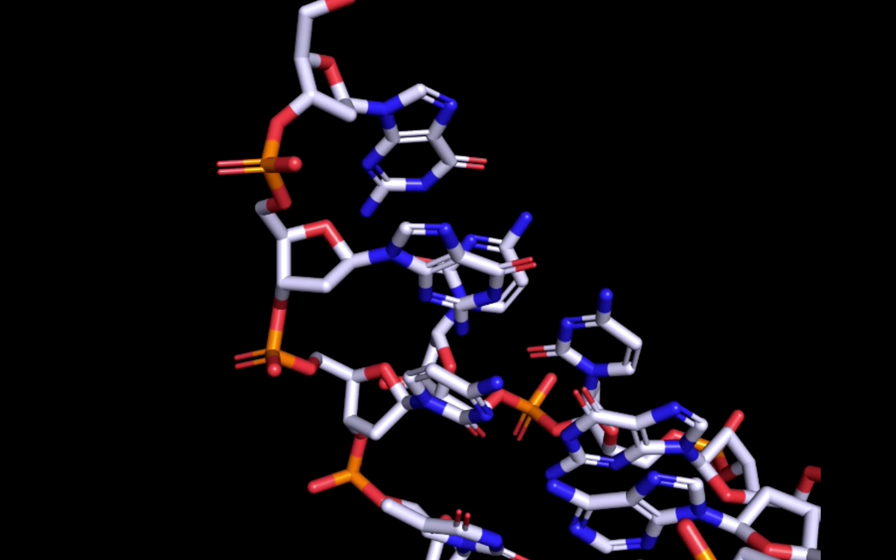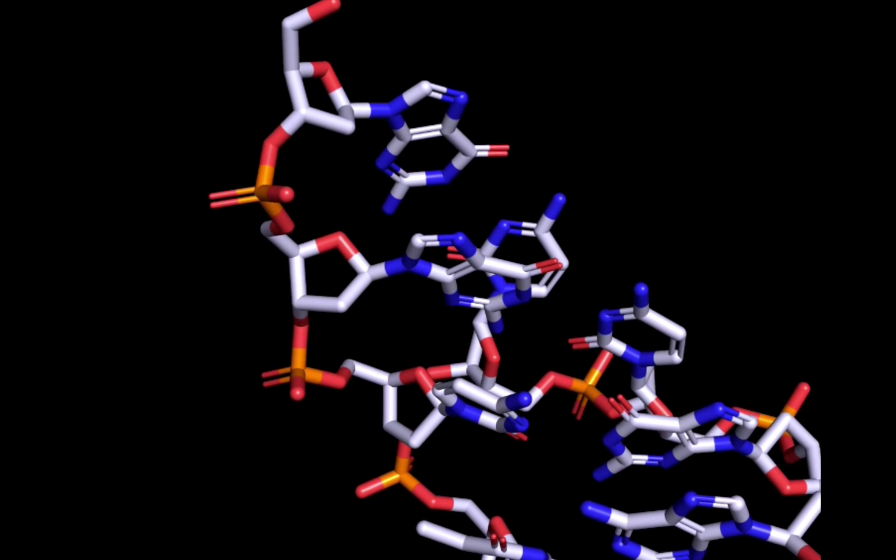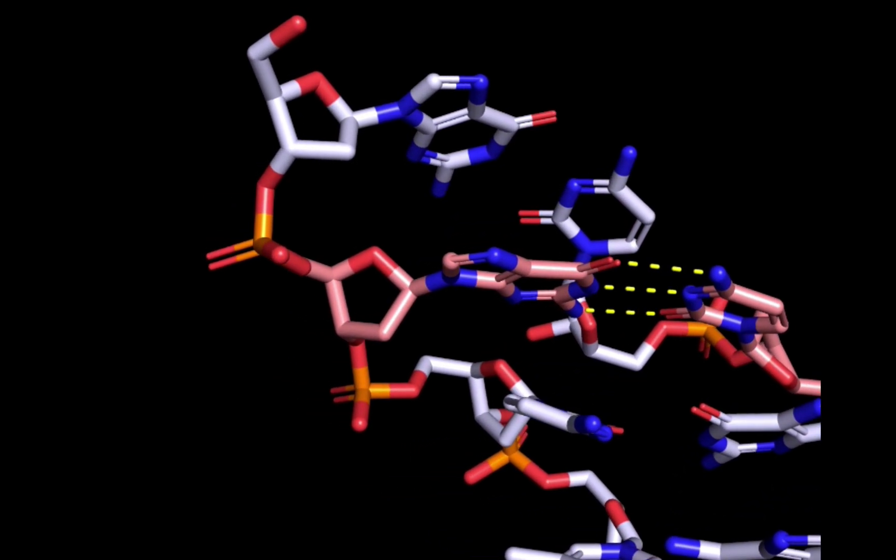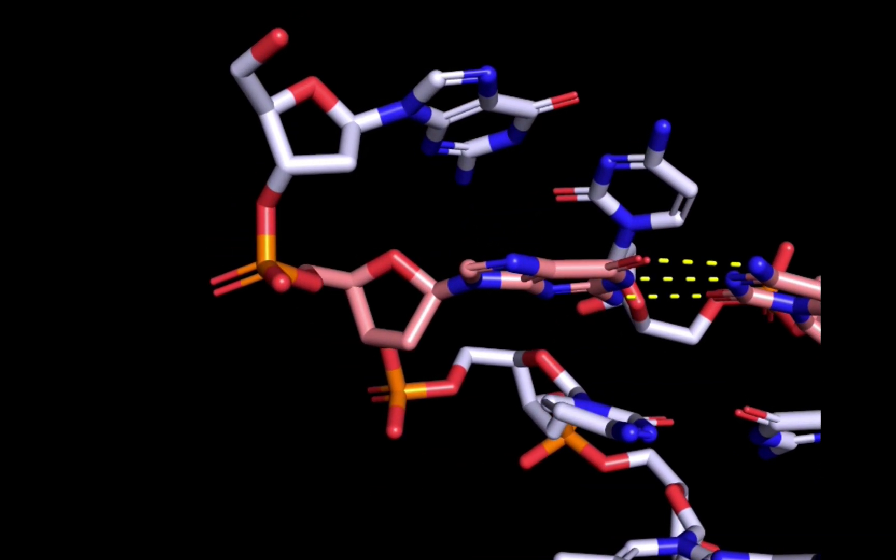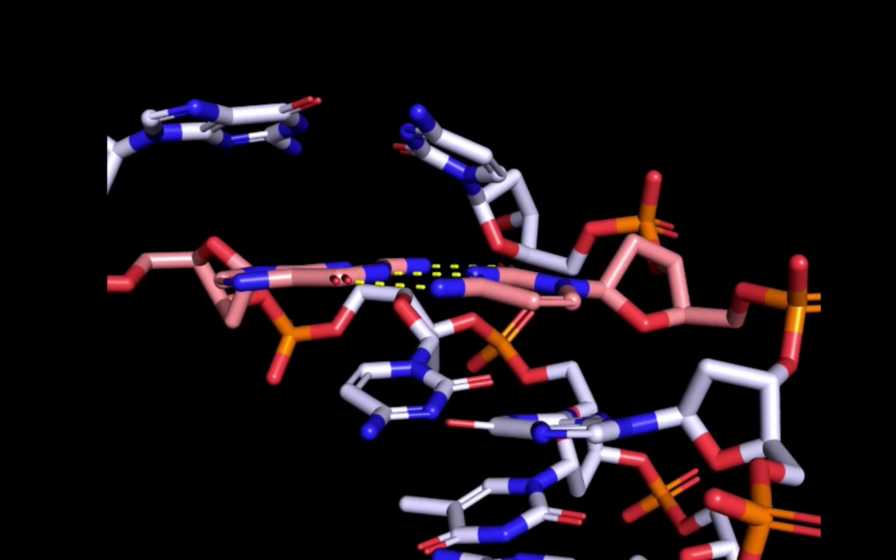The two paired strands do not run in the same direction. They actually run anti-parallel, or in opposite directions. We can see this by looking at the sugars associated with a single base pair. Notice how the oxygen atom points upward here, but points downward on this side?